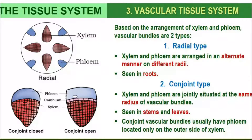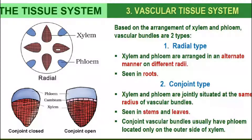In the conjoined type, xylem and phloem are found on the same radius. Xylem and phloem arranged in an alternate manner on different radii are called radial vascular bundles. Radial types of vascular bundles are found in roots.